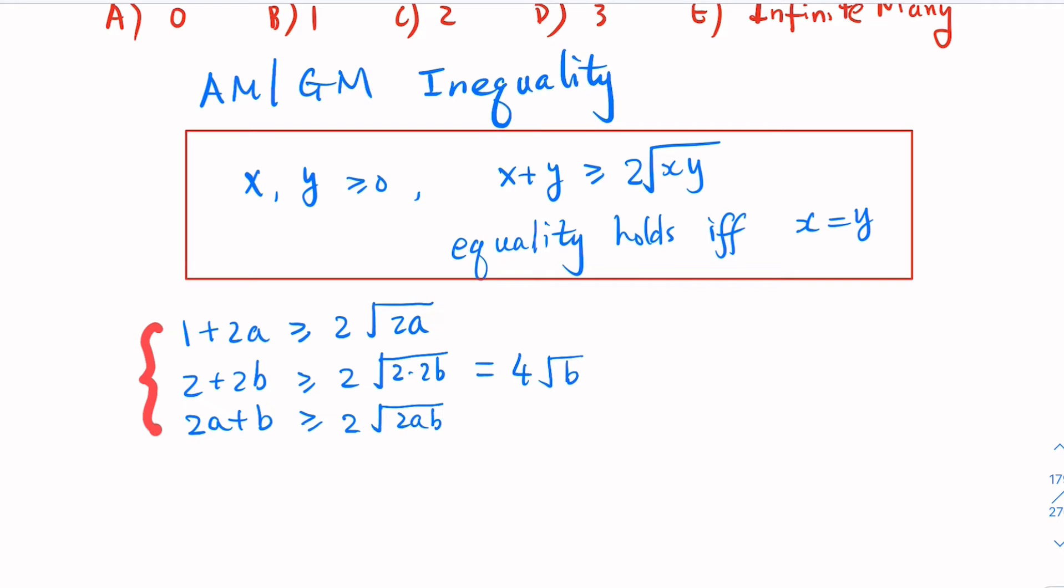Since the quantities are positive, it is safe to multiply these inequalities. The left-hand side equals (1 + 2A)(2 + 2B)(2A + B), which is greater than or equal to the product of the right-hand sides. That's 2·4·2 = 16, times √(2A)·√B·√(2AB) = 16√(4A²B²) = 32AB.